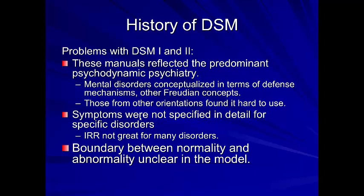We didn't have specific, measurable symptoms, and inter-rater reliability was very poor for diagnoses in DSM-1 and DSM-2, which defeats the whole purpose of a classification system. It also made the boundary between normality and abnormality unclear — there wasn't a clear definition of when something becomes a disorder, though it's debatable whether there really should be a strict boundary or whether it should be a continuum.